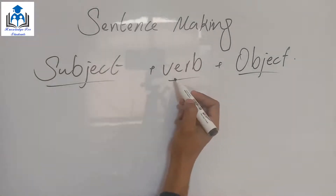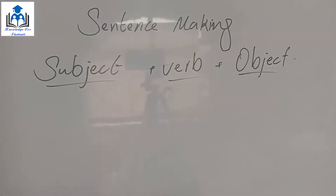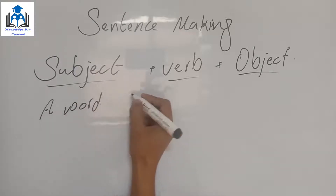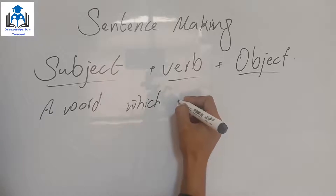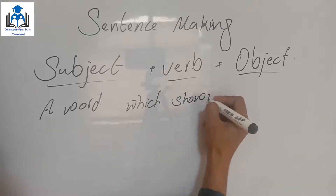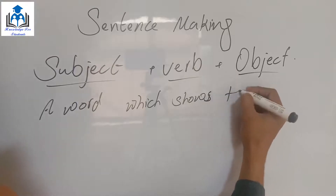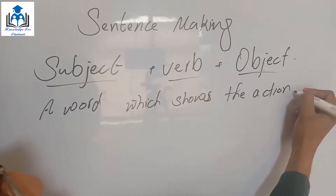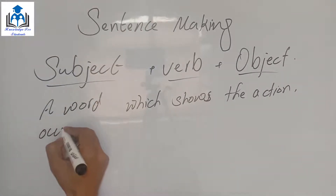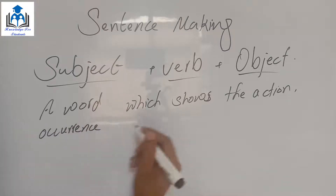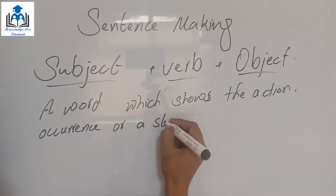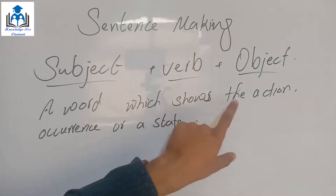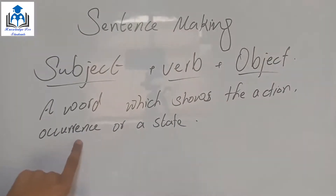Now our second point: what is a verb? A verb is a word which shows the action, an occurrence, or a state — جو کہ ظاہر کرتا ہے کسی action کو، کسی واقعے کو، یا پھر کسی حالت کو۔